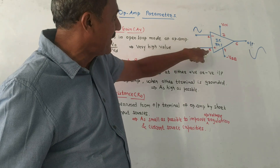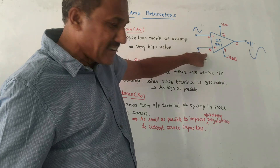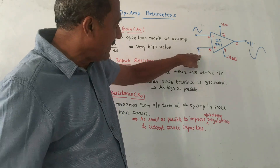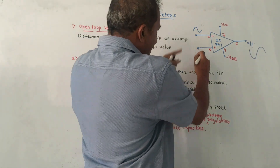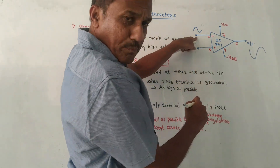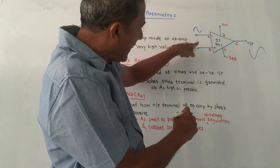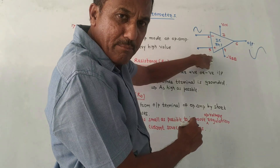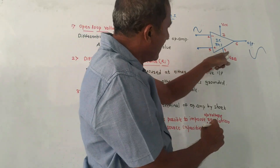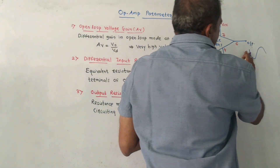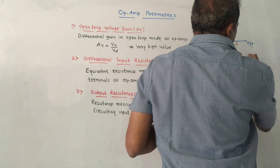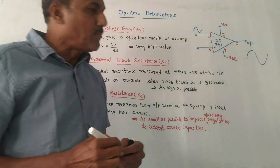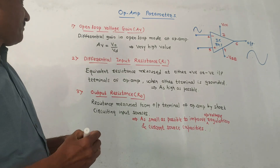Provided that pin number 3, the non-inverting terminal, is grounded. Another case: if we ground pin number 2 (the inverting terminal) and apply input to pin number 3 (the non-inverting terminal), then you will get an amplified output which will not be inverted, so output and input will be in phase.